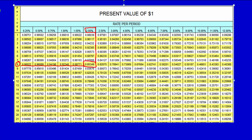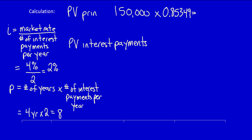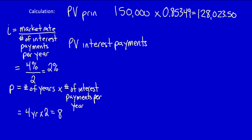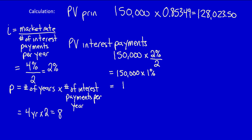Multiplying $150,000 by the factor 0.85349 gives us $128,023.50 — the present value of the single sum. Now we need the present value of the interest payments. The interest payments are the face amount times the coupon rate: $150,000 × 2%. But since 2% is the annual rate, we divide by the number of payments per year (two), giving us $150,000 × 1% = $1,500. That's the amount of interest paid every six months on June 30th and December 31st.